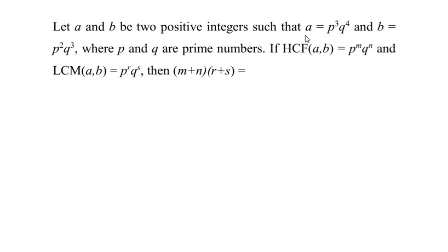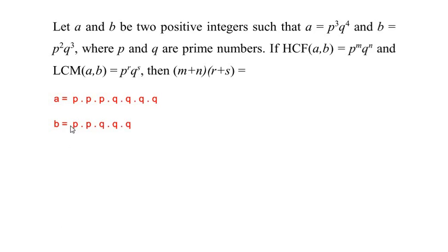Let us begin by writing a as p to the power of 3, which is p times p times p, and q to the power of 4, written as q multiplied 4 times. Similarly, we write b as p to the power of 2, which is p times p, and q to the power of 3, written as q times q times q.